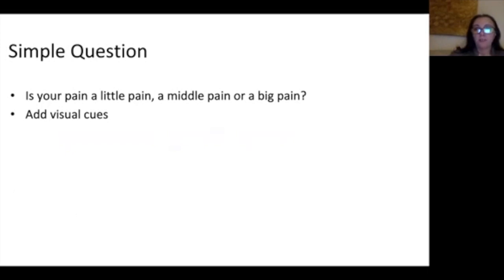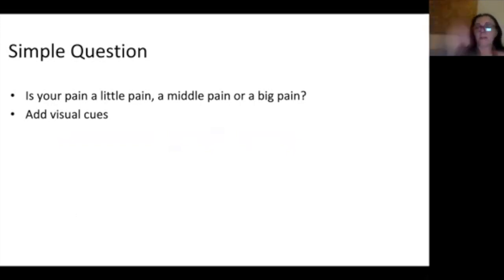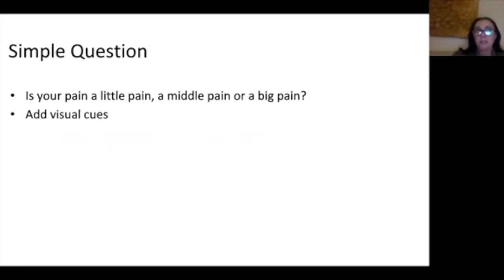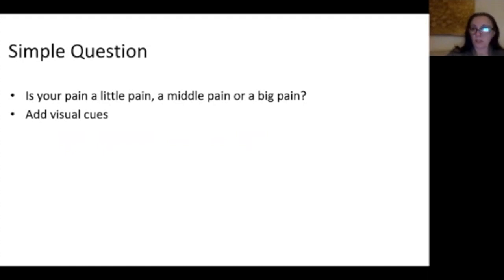If none of those scales are working and the child isn't really understanding them, sometimes I just say: is your pain a little pain, a medium or middle pain, or a really big pain? When you break it down to something really simple, often kids can tell you whether it's a small pain or a big pain. Remember that numerical rating scales, if you're going to use them, must be used regularly — you can't say my eight is the same as someone else's eight, but if a child goes from an eight to a six after medication, that's how you know the medication is starting to work.